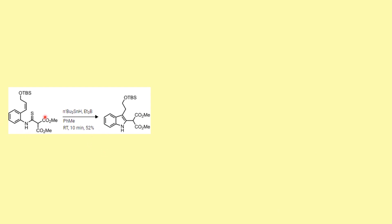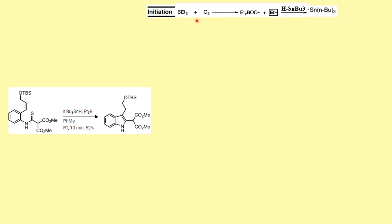What we have is this thioamide moiety and the respective substituent. One advantage of this reaction is that we already have the desired substrate at this position. On the ortho position, you should have an alkyne appropriately placed. When we expose this to tributyltin hydride and a radical initiator — here triethylborane — what you get is the 2,3-disubstituted indole. This first step is pretty straightforward and well known.